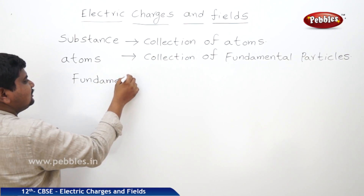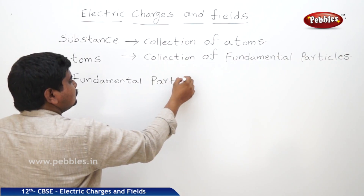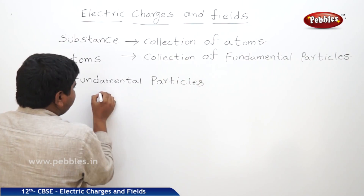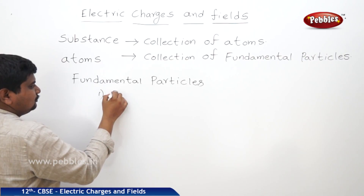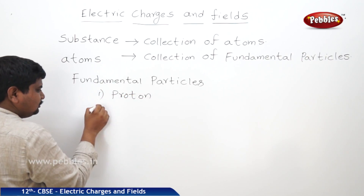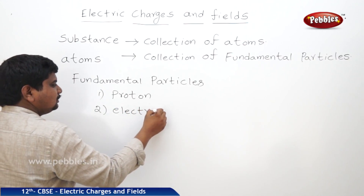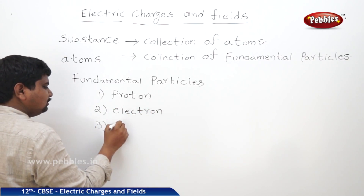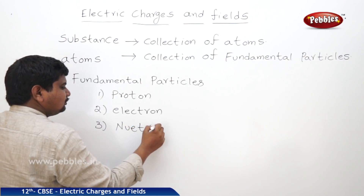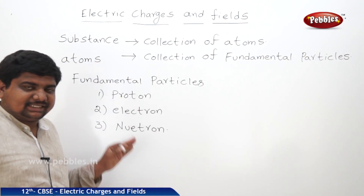The fundamental particles are: first, proton; second, electron; third, neutron. These three particles are called fundamental particles.